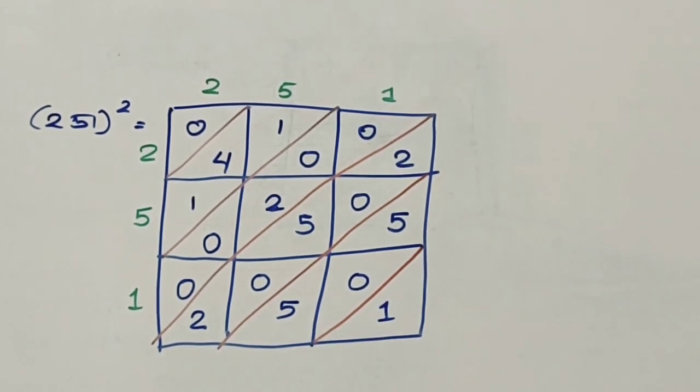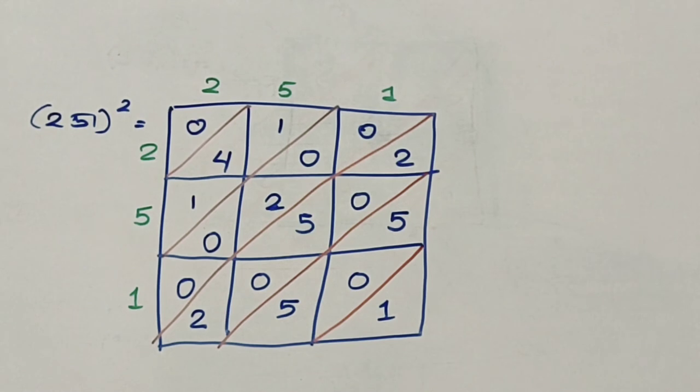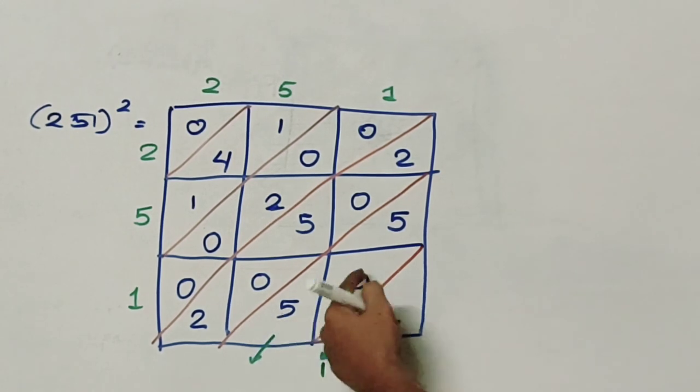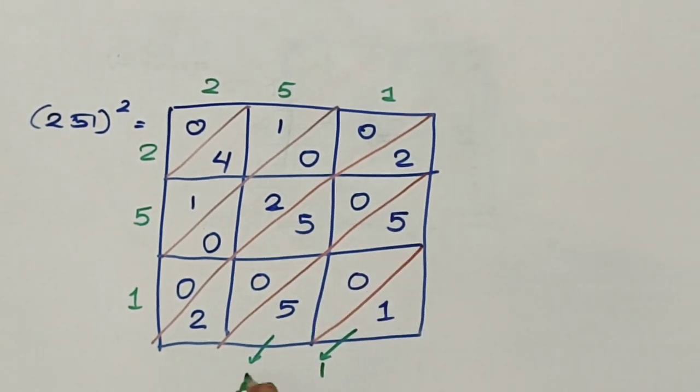So let us find the numbers and the answer. The first diagonal gives me 1. Second diagonal gives me 5 plus 0 plus 5, which is 10.